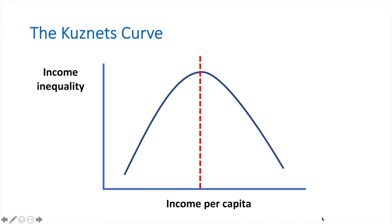Fifth is the Kuznets Curve, which demonstrates the relationship between income inequality and income per capita. It shows that as a country gets richer, inequality initially widens, then lessens as a country moves towards higher levels of development. This is explained by the movement of workers from agriculture to manufacturing, with income gains being generated to owners of capital and workers in manufacturing faster than to workers in the agricultural industry. On the right side, where inequality is falling, it is often supported by claims that as a country gets richer, the government will improve welfare programs aimed at reducing inequality. While the curve offers some explanation about development and inequality, it doesn't explain how rich nations can suffer from increasing inequality.